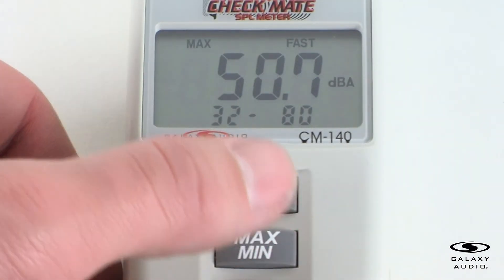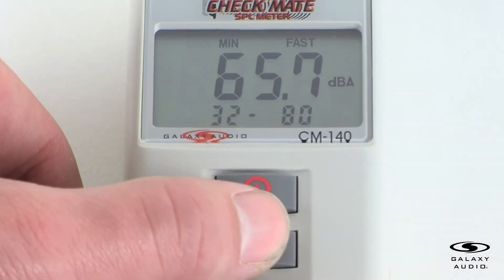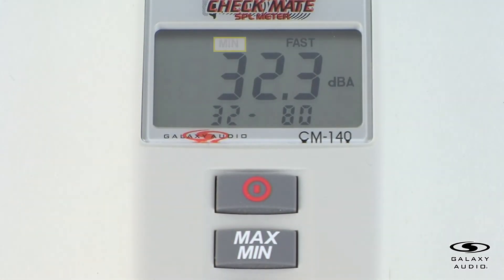Press the button once to select the max value. The CM140 will now display the maximum SPL measured. Press the button again to select the min value, which will display the minimum SPL measured.